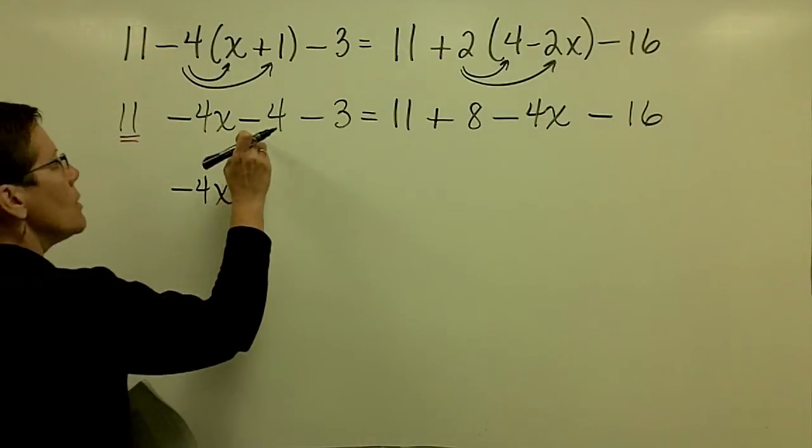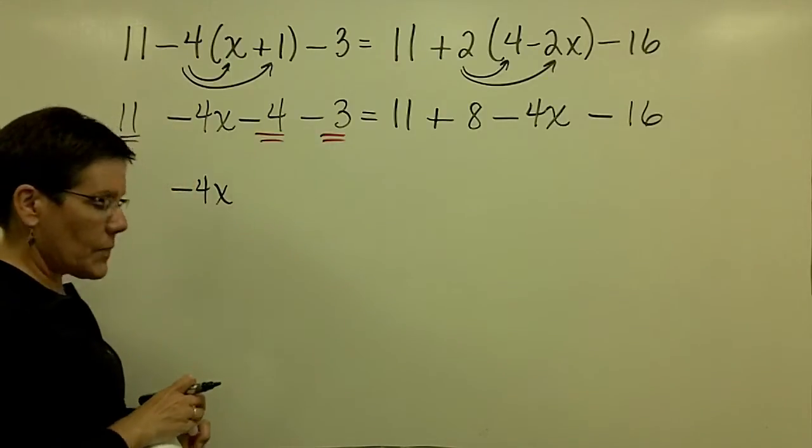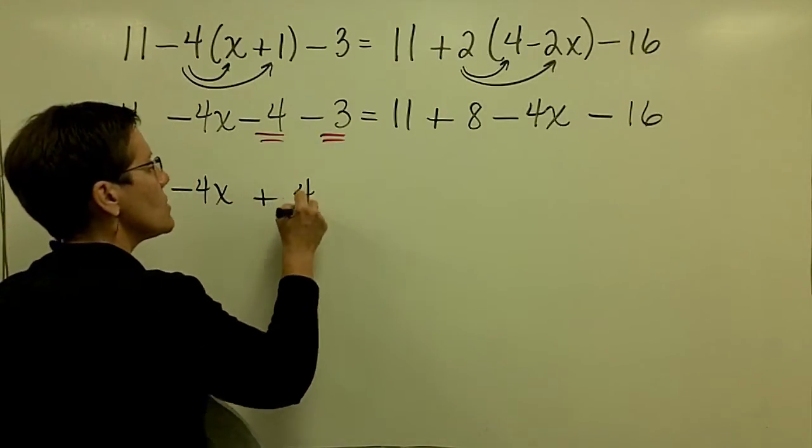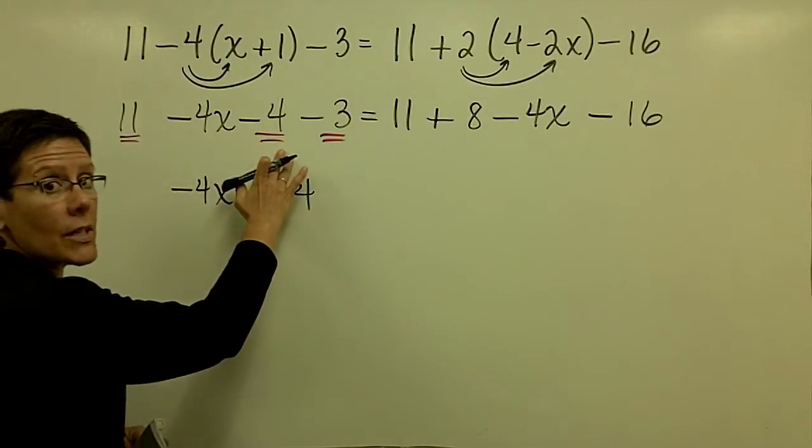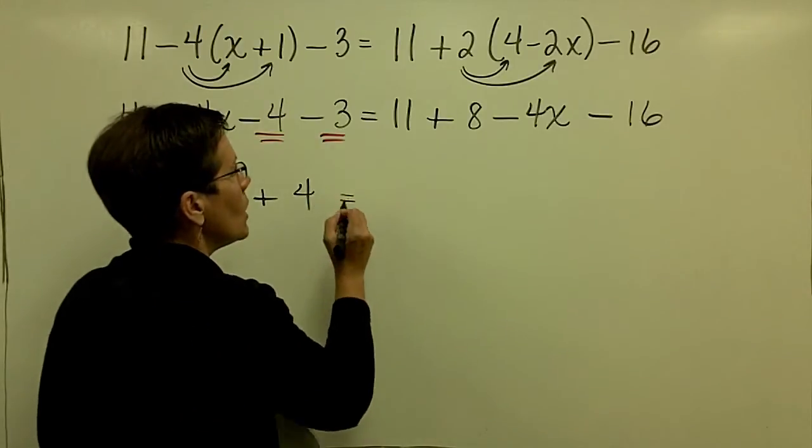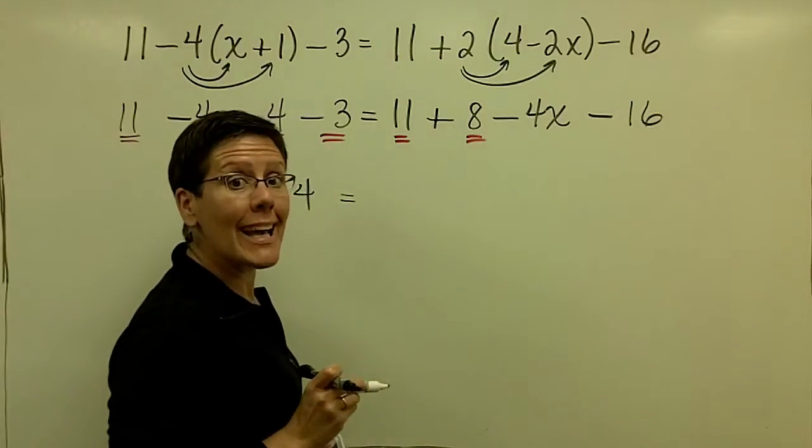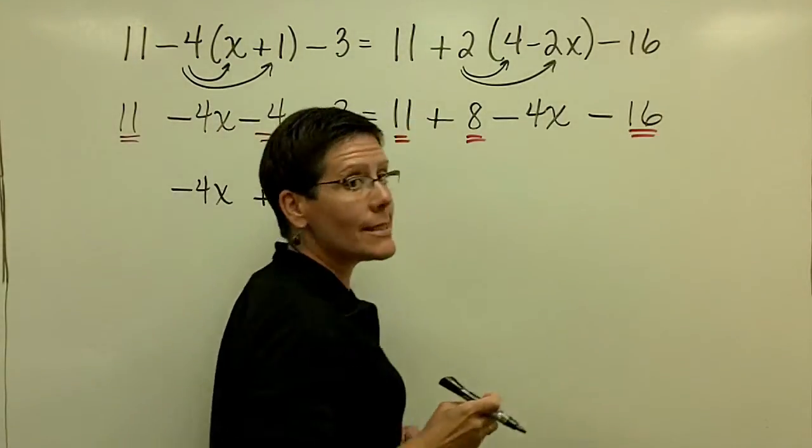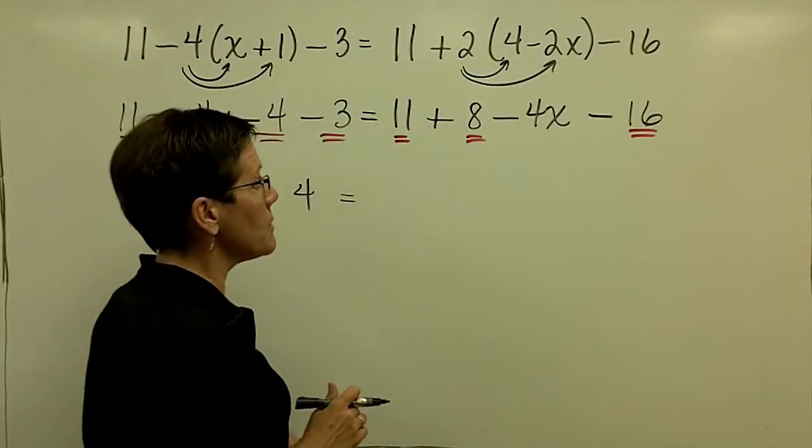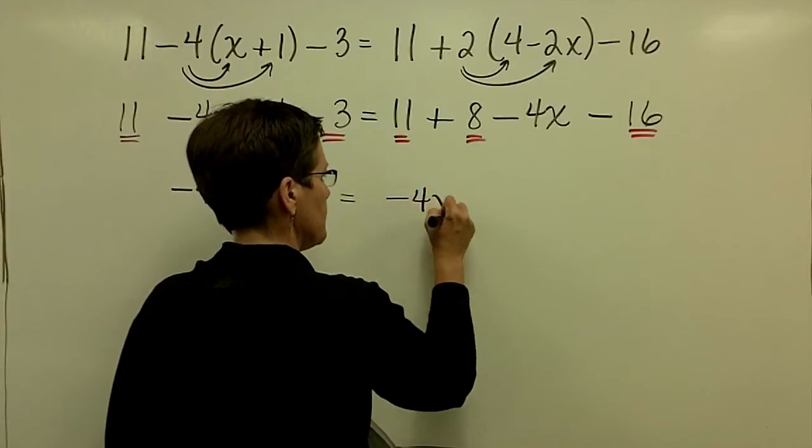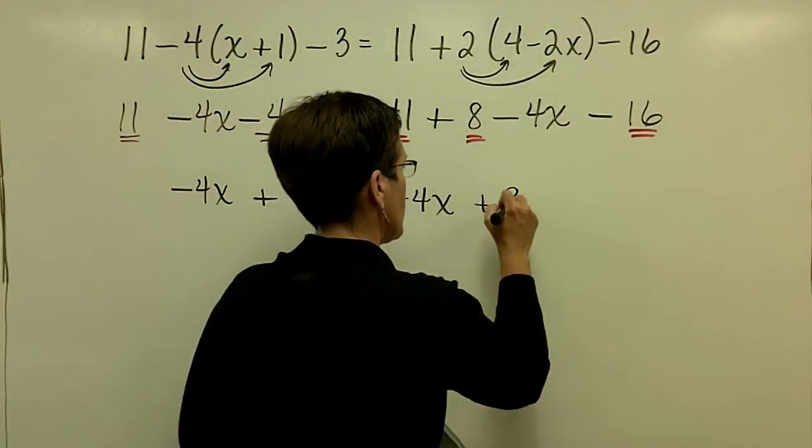Let's now collect our like terms. So I'm going to bring this negative 4x down. But 11 minus 4 is 7, minus 3 is 4. So I went ahead and worked left to right and kept those values in my head. 11 minus 4 is 7, and 7 minus 3 is 4. Over here, we've got our like terms. We've got an 11 and an 8. They'll add to be 19. And then when we subtract 16, we'll get 3. So you can work left to right and get those values in your head. So I have that negative 4x. I want to check this one more time. 11 plus 8 is 19, minus 16 is 3.